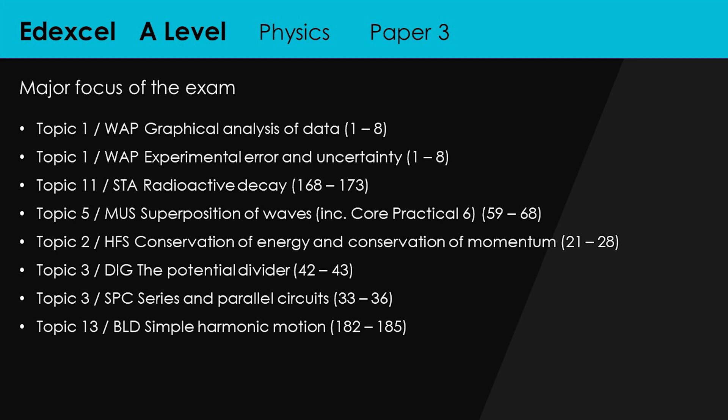All of this is supported with videos over at A-level physics online. If there's anything here you're not quite sure about — something taught during lockdown, something taught remotely, or something you missed in school — you can head over to alevelphysicsonline.com, buy a premium plan for just £19.99, and get instant access to hundreds of extra videos to help you understand this course whenever you need it.